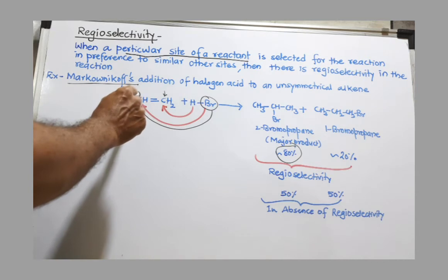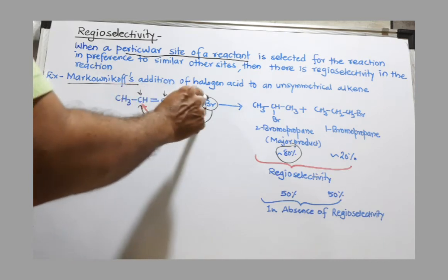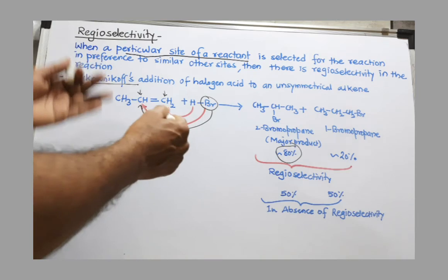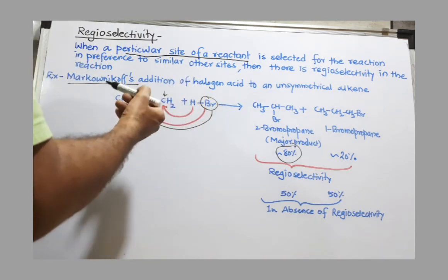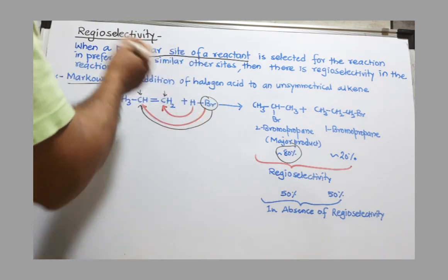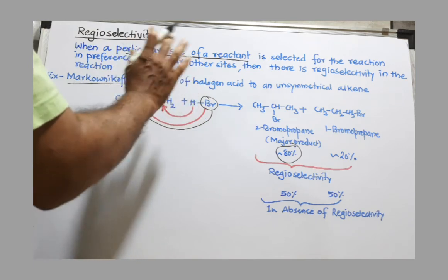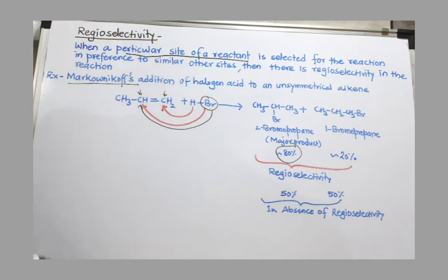This is selected by the negatively charged moiety. So this is an example of regioselectivity.